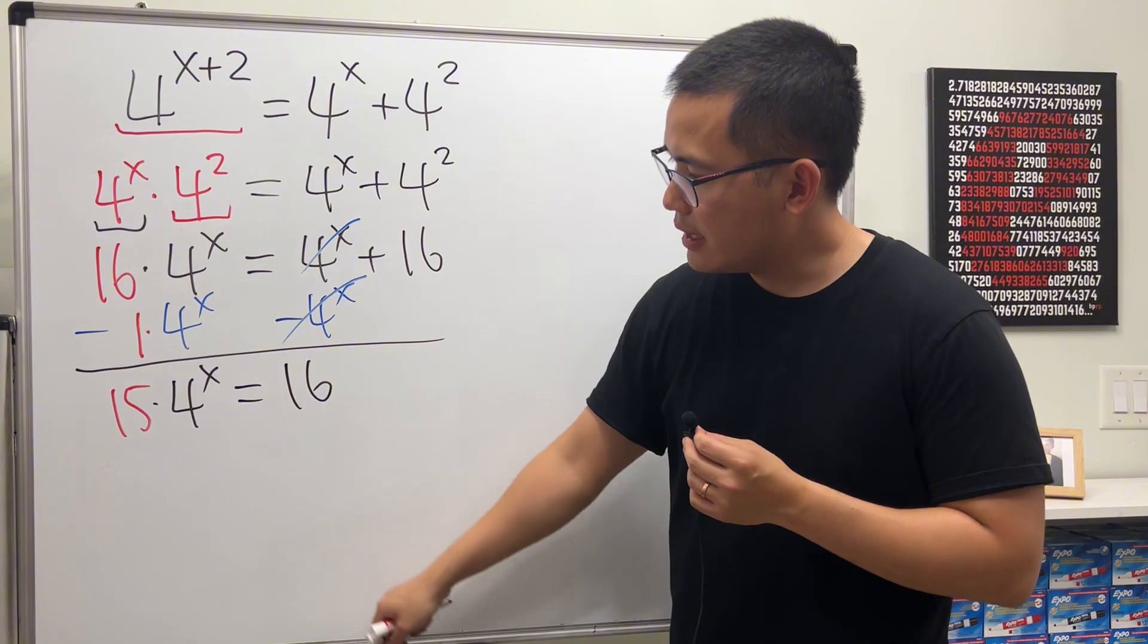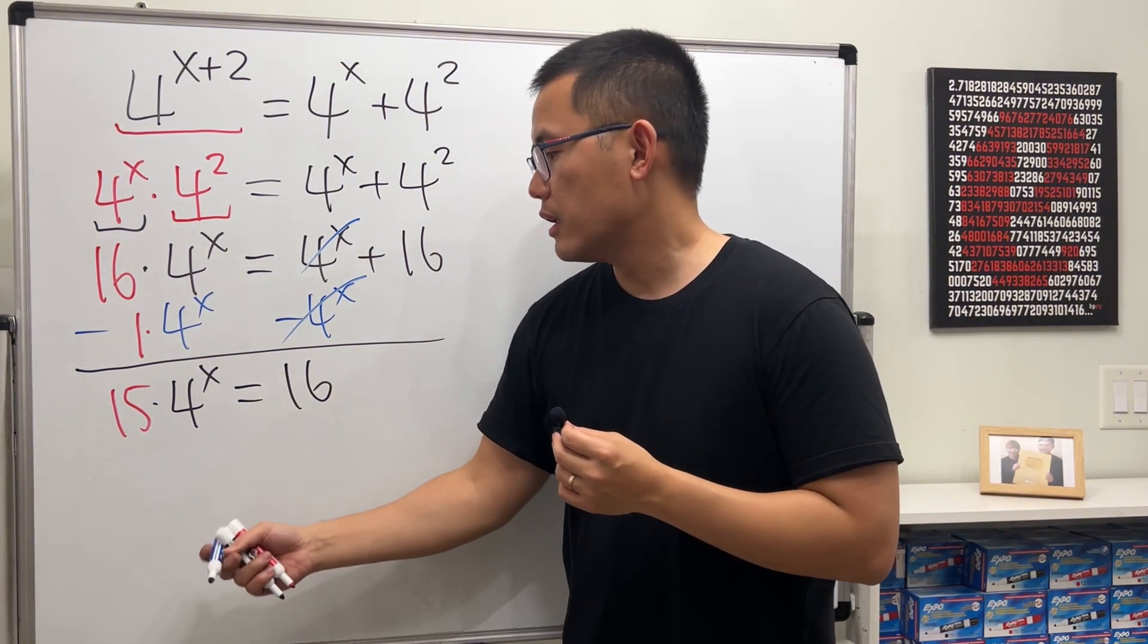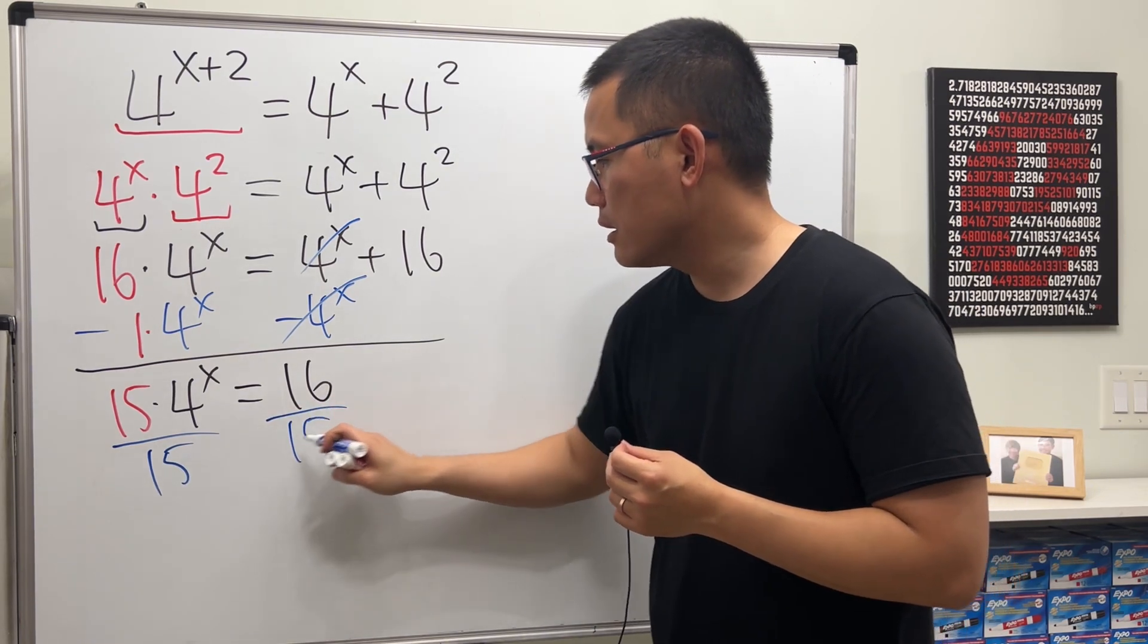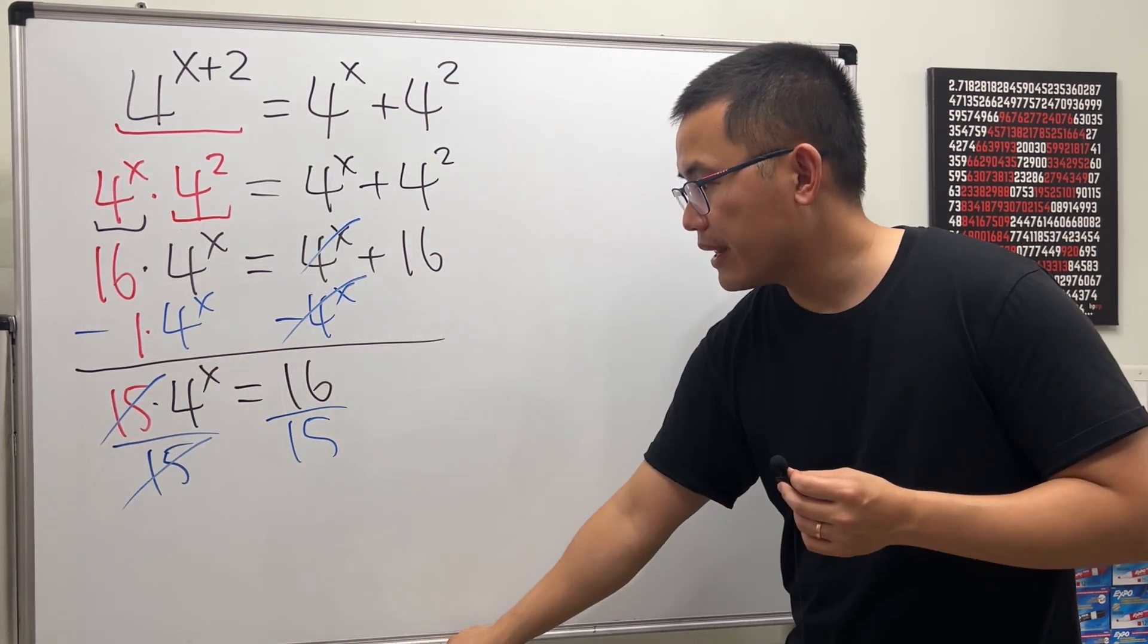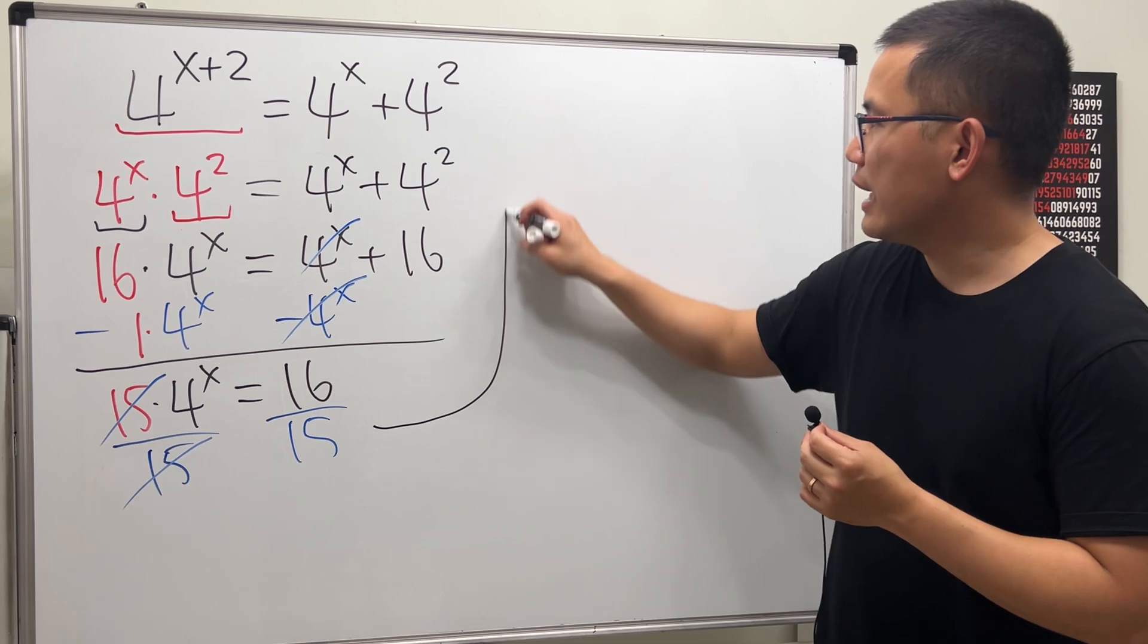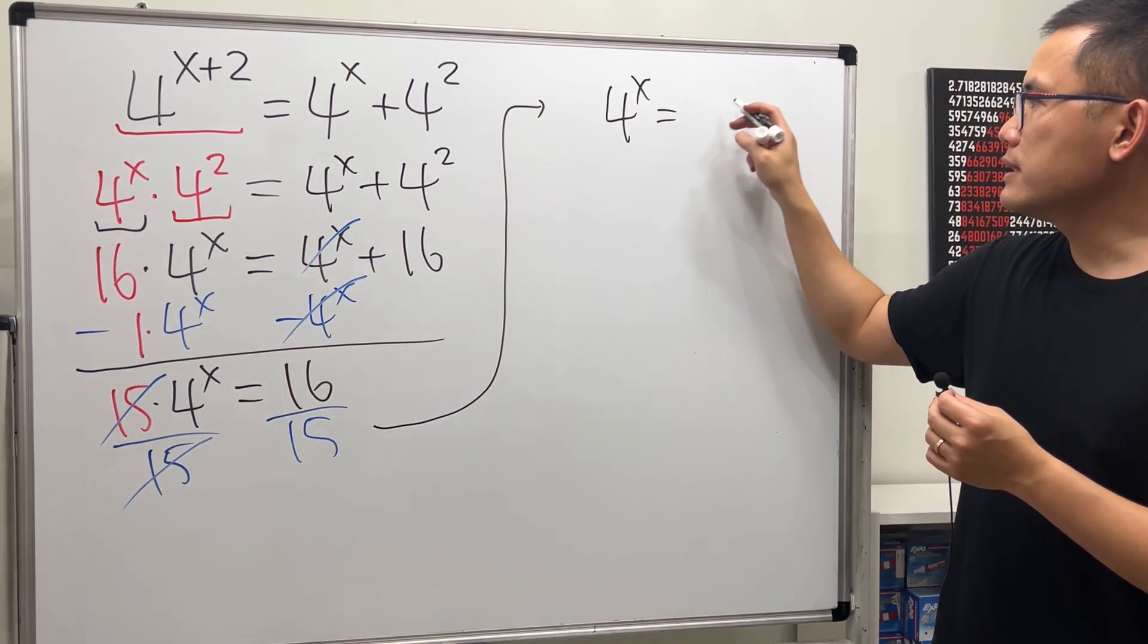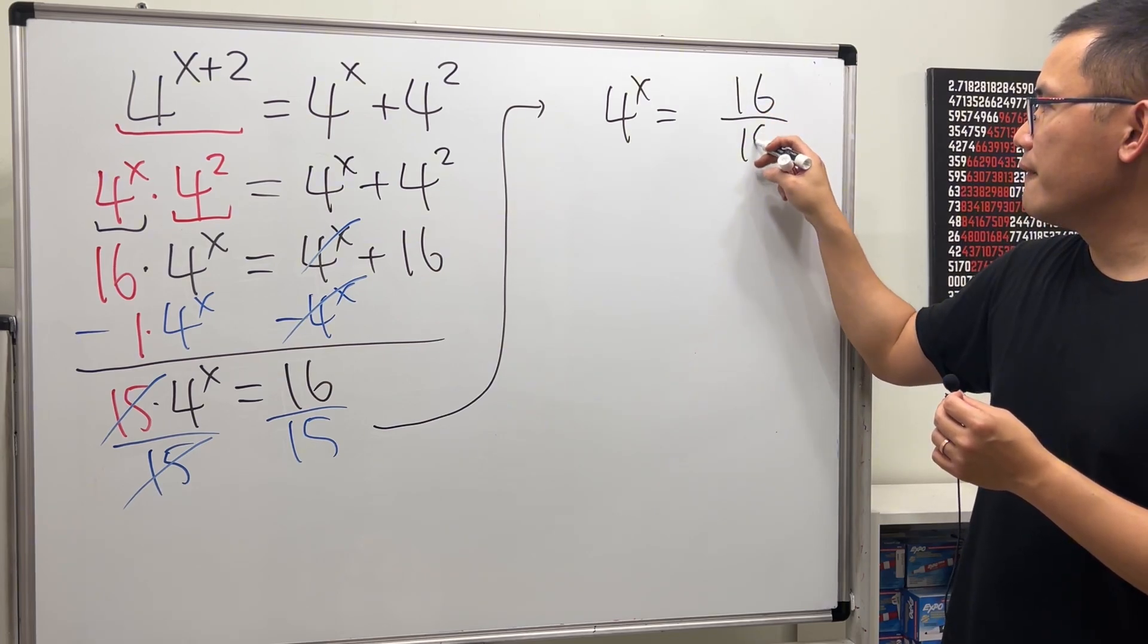x is right here in the exponent. We will have to first get rid of the 15, and to do so we divide both sides by 15. So that will cancel. Then we are looking at 4^x equals 16 over 15.